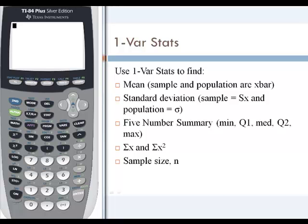The calculator will also give us the five-number summary under OneVarStats and the sum of x and the sum of x squared. The calculator will also give us the sample size, n, but that is fairly minor compared to the other statistics.